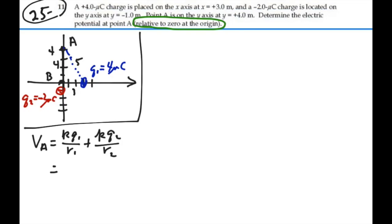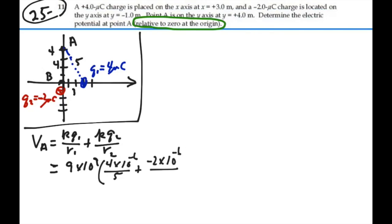So this is going to be equal to 9 times 10 to the 9 times Q1, which is 4 micro coulombs, divided by 5 meters, plus Q2, which is minus 2 micro coulombs, divided by 5 meters. Calculating this out, I get 3,600 volts. That is the potential at point A.